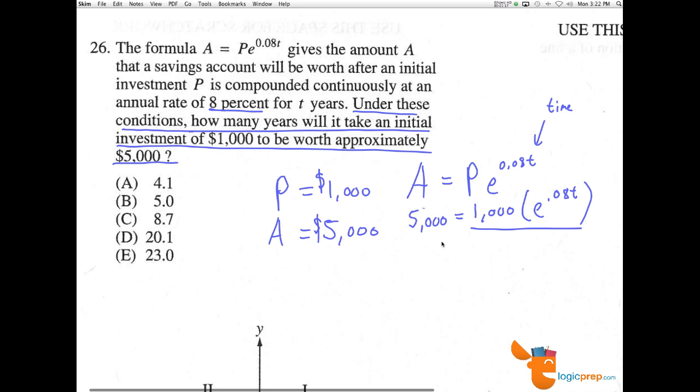So I divide both sides by 1,000, and I have 5 equal to E to the 0.08T.